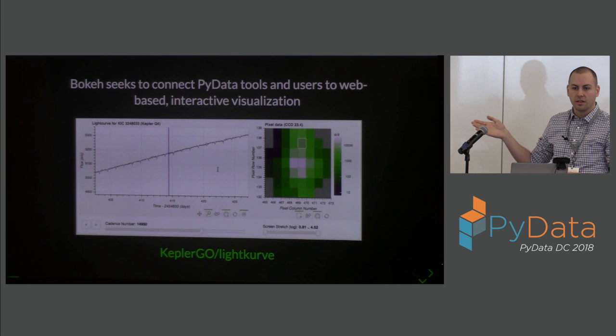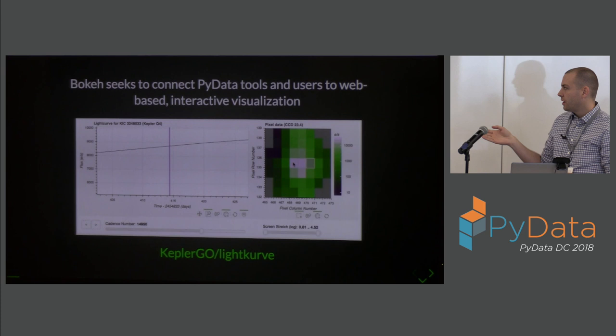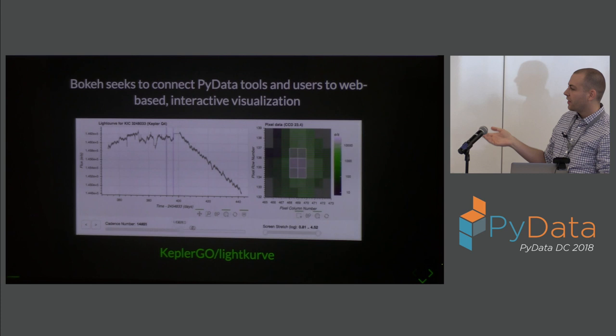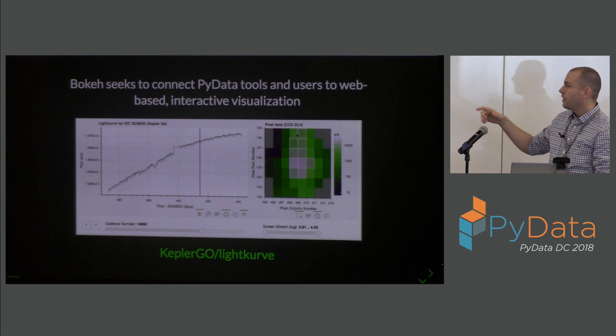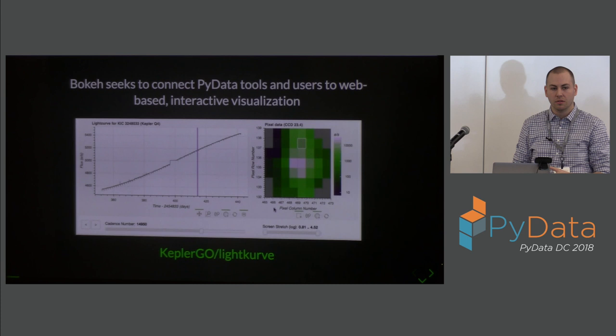This is a tool developed by the Kepler folks at NASA. Kepler is a satellite that picks up electromagnetic radiation from outer space to try to detect what is out there. They've built a tool to examine the flux signal they're getting on individual pixels to look at the signals so they can do manual data cleaning.